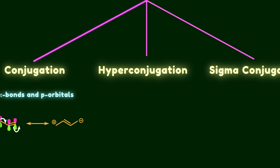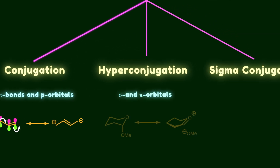Hyperconjugation is the interaction between sigma and pi orbitals. Recall the carbohydrate example where the carbon-oxygen bond is more stable in the axial position. This is a classic example of hyperconjugation, in which non-bonding electrons interact with the anti-bonding orbital of a carbon-oxygen bond.